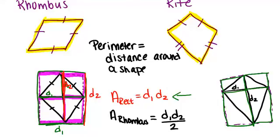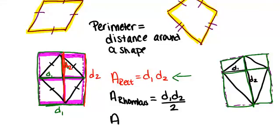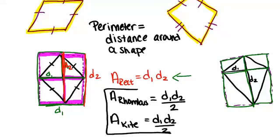So, the formula for the area of a kite is the same as the formula for the area of a rhombus. It's just diagonal one times diagonal two divided by two. And that's by relating rhombuses and kites to rectangles.